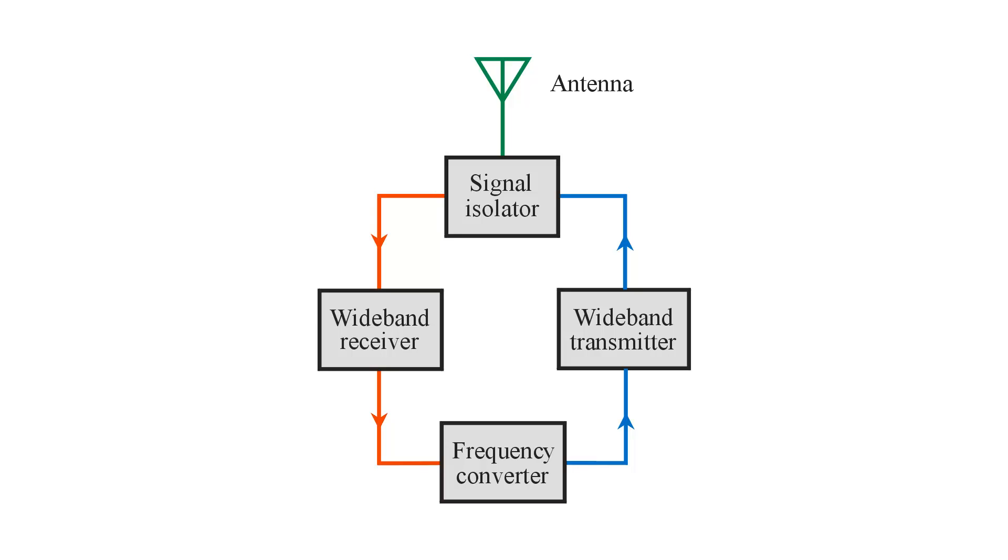A transponder is similar to a repeater, but there's one very important difference. Whereas a repeater reproduces a signal at one frequency, typically, or a pair of frequencies, a transponder reproduces a wide band of frequencies.